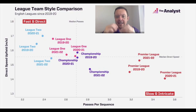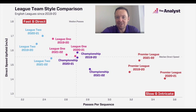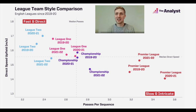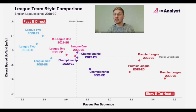We'll point everyone to The Analyst article — link below, recommend everyone reads it. The first thing I want to look at is style comparisons. When I see 'slow and intricate' and 'Premier League' written beside it, I think there's no way the Premier League is slow. But that's basically what you're talking about — the verticality in the play.